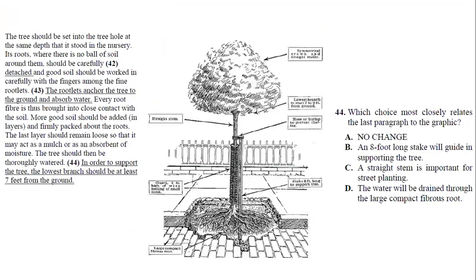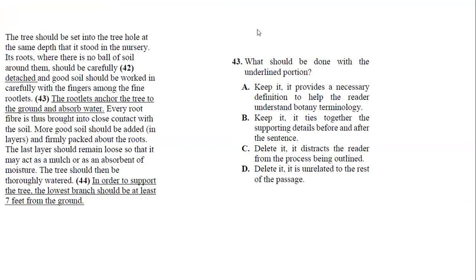And finally, number 43. In number 43, they're asking about the sentence, should I keep it or not? This sentence is talking to you about the rootlets, the function of the rootlets. The passage is talking to you about what you should do with the trees so that you can plant it. It should be, the soil should be worked out, you should bring it into close contact. So this is a process. This is talking about background information about the rootlet, so we're going to delete the sentence because it distracts the reader from the process being outlined.